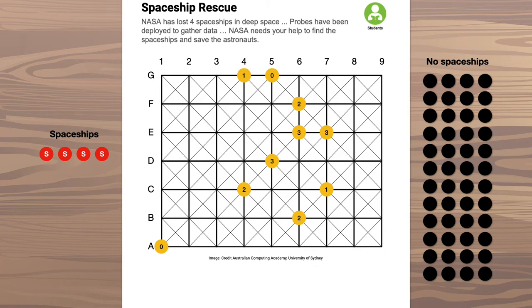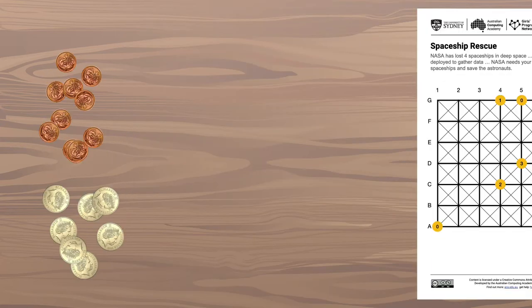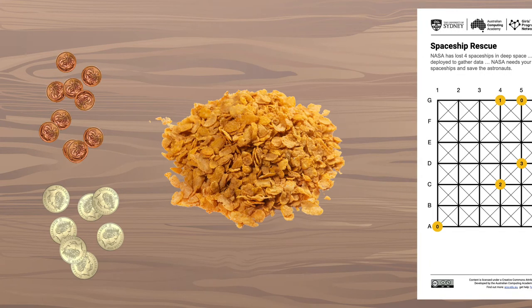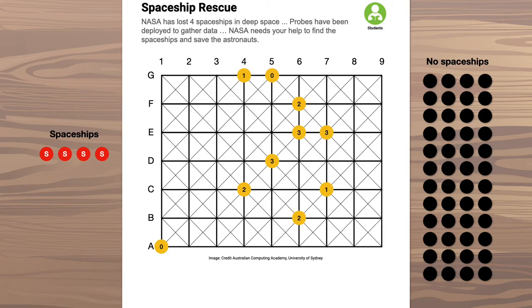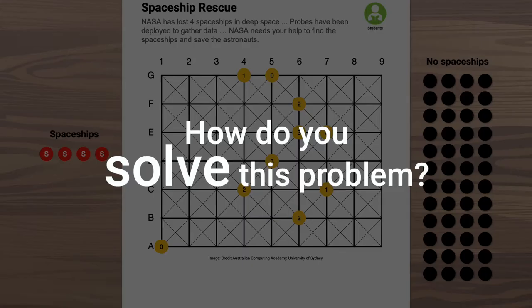And if you don't want to cut out all those markers, you could use coins, or cornflakes, or something else you have lying around. How do you actually solve this problem?